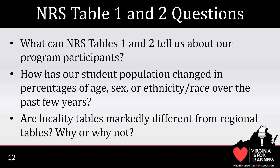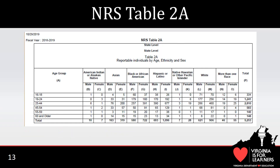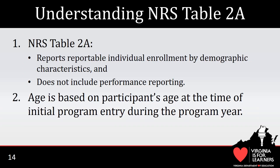Here are some questions you may want to ask about your region's participants. This slide contains a snapshot of state-level data reported on NRS Table 2A, which is new for 2018-19. An interesting point to note is that the number of reportable individuals statewide is approximately 30% of the number of participants reported last year. The table layout for NRS Table 2 and Table 2A is the same. The difference is that Table 2 represents participant information, whereas Table 2A represents information for reportable individuals who are not participants.